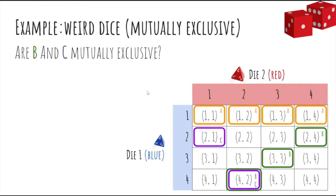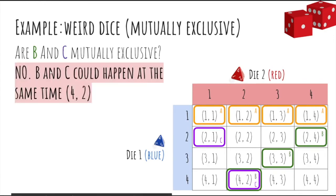What about B and C? Well, it turns out that if you get 4, 2, then both B and C occur at the same time, so it's possible for them to both happen. Therefore, they are not mutually exclusive, because there is overlap between these events.